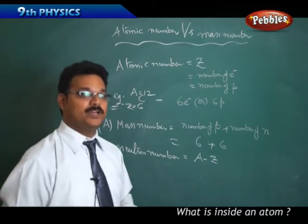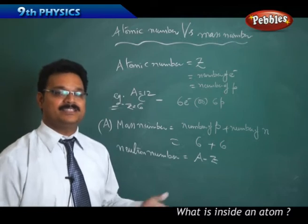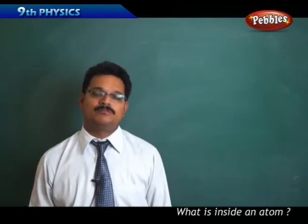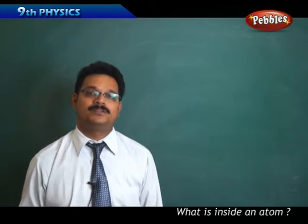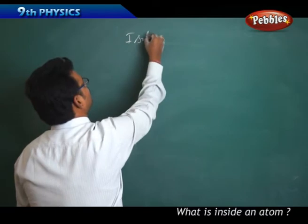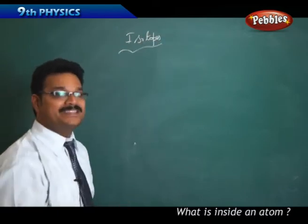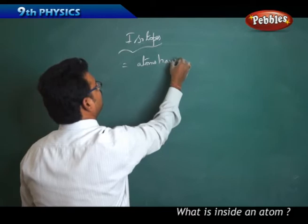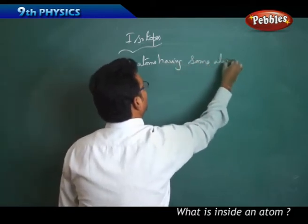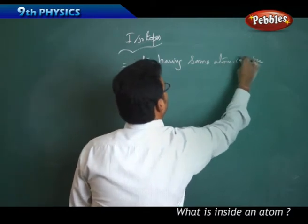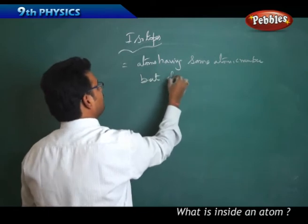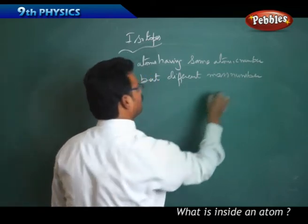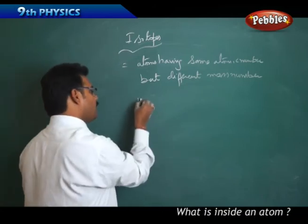For nitrogen N-7-14, the neutron number is 14 minus 7, which equals 7. Using this formula you can find any neutron number. Now the next topic is isotopes. Isotopes are defined as atoms having the same atomic number but different mass numbers.